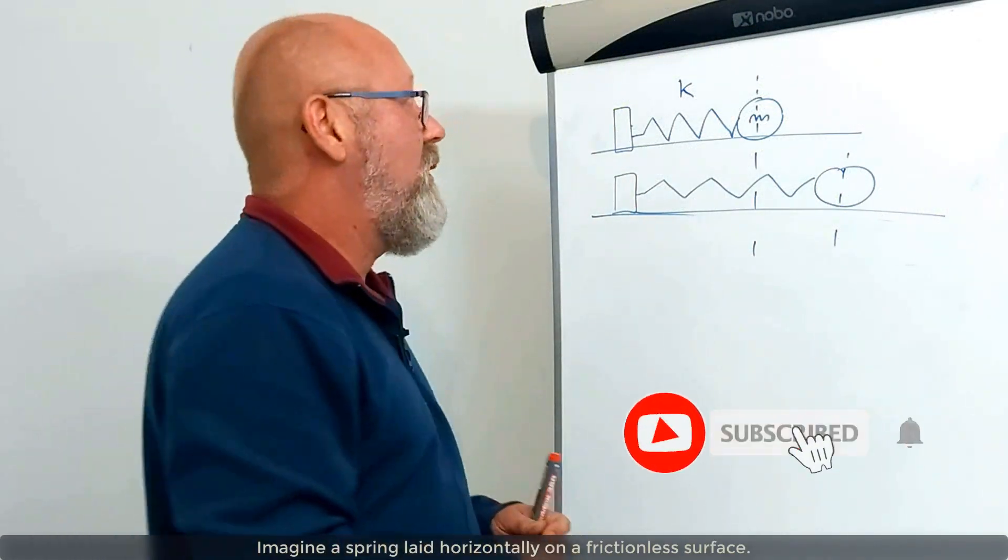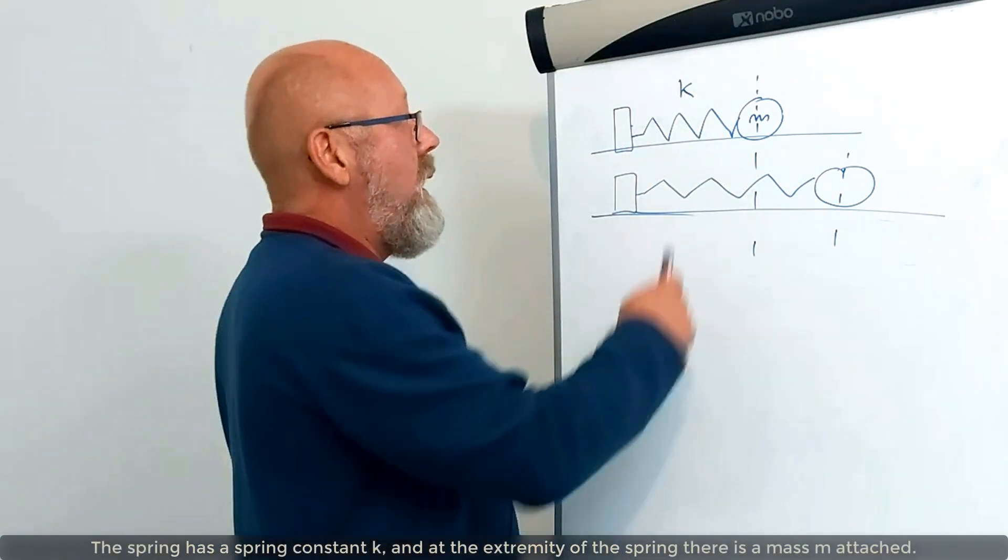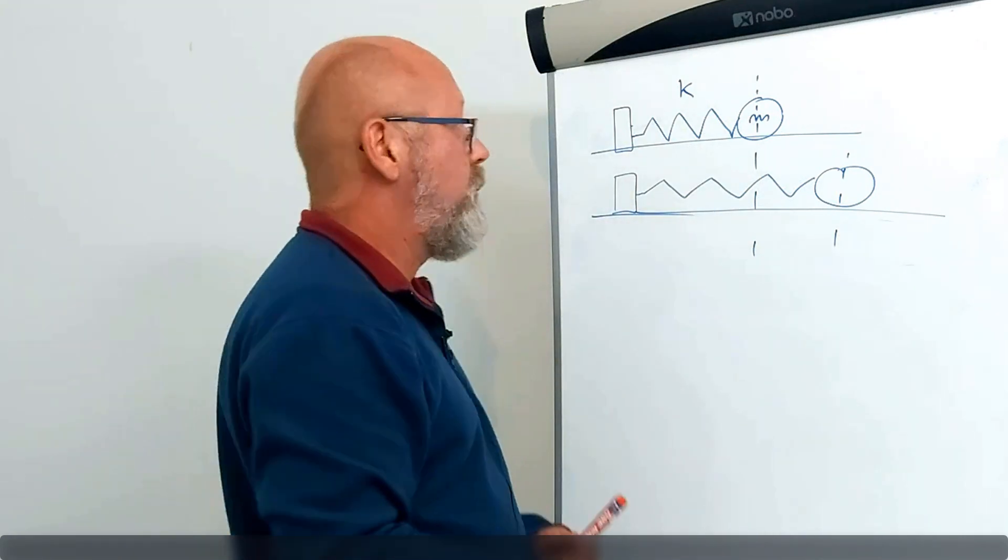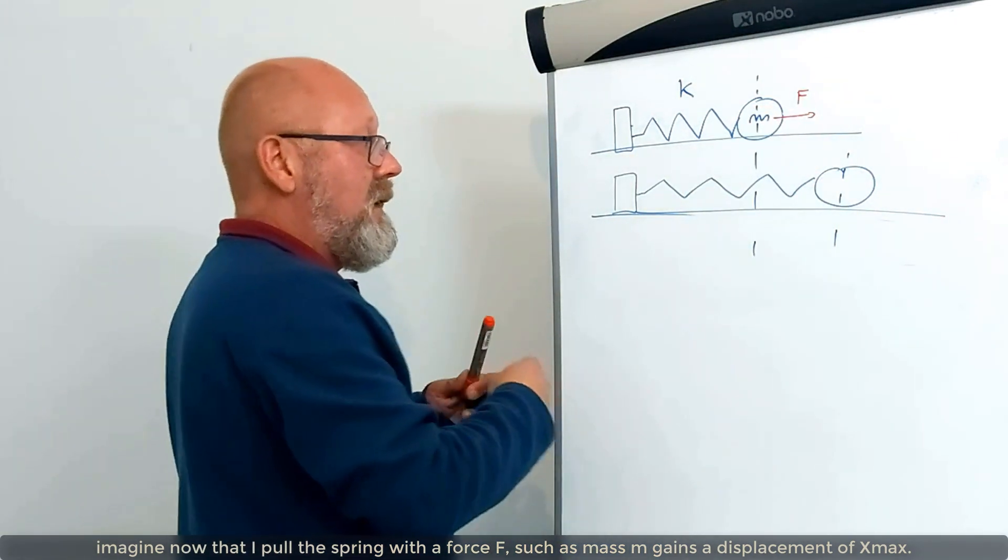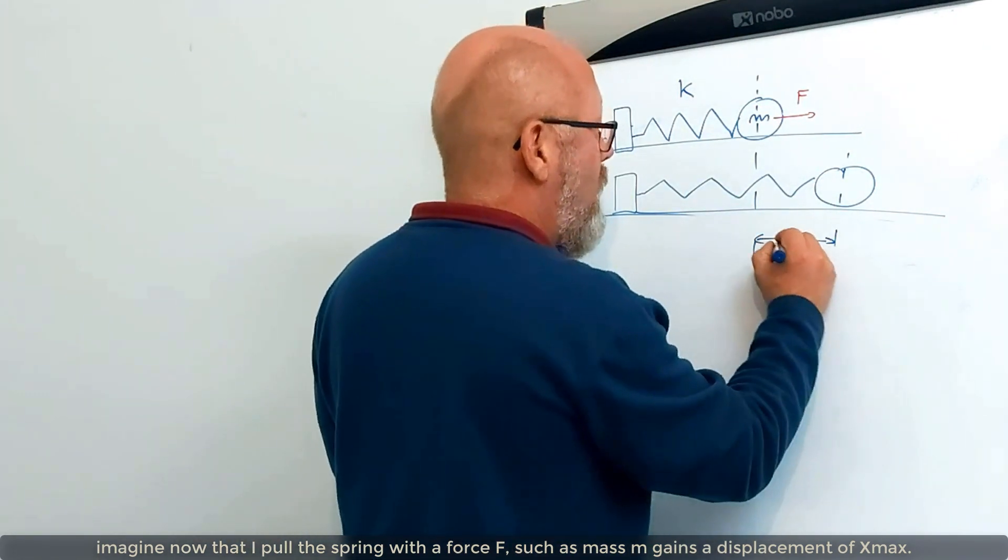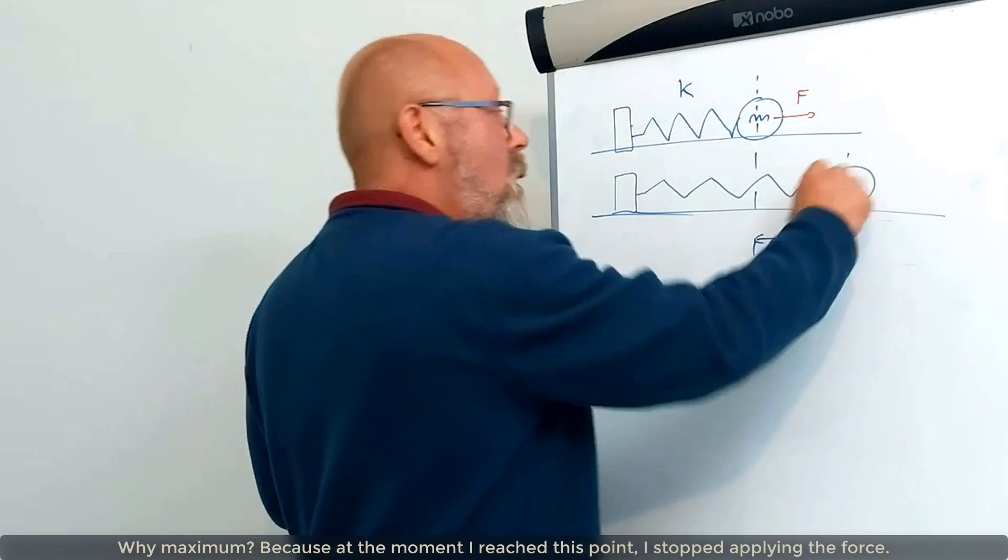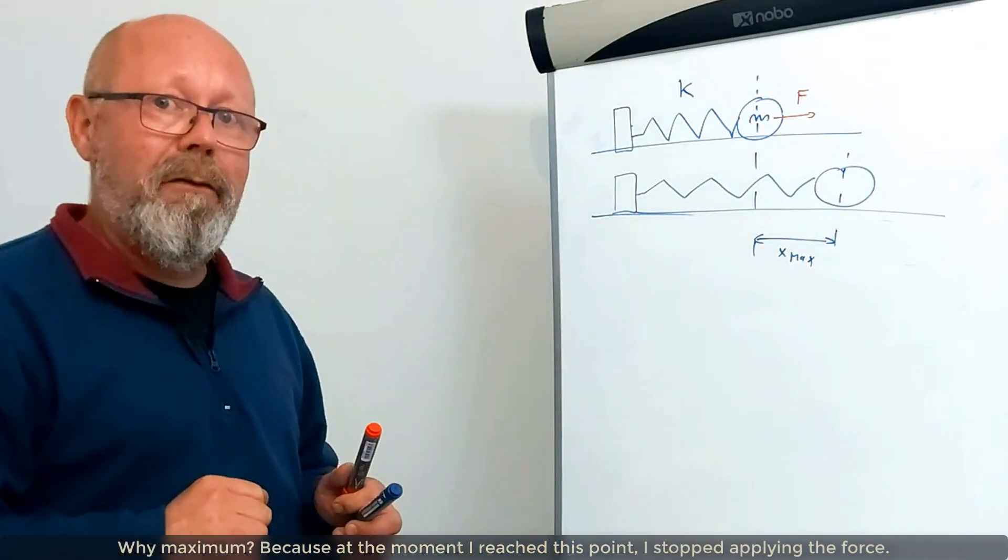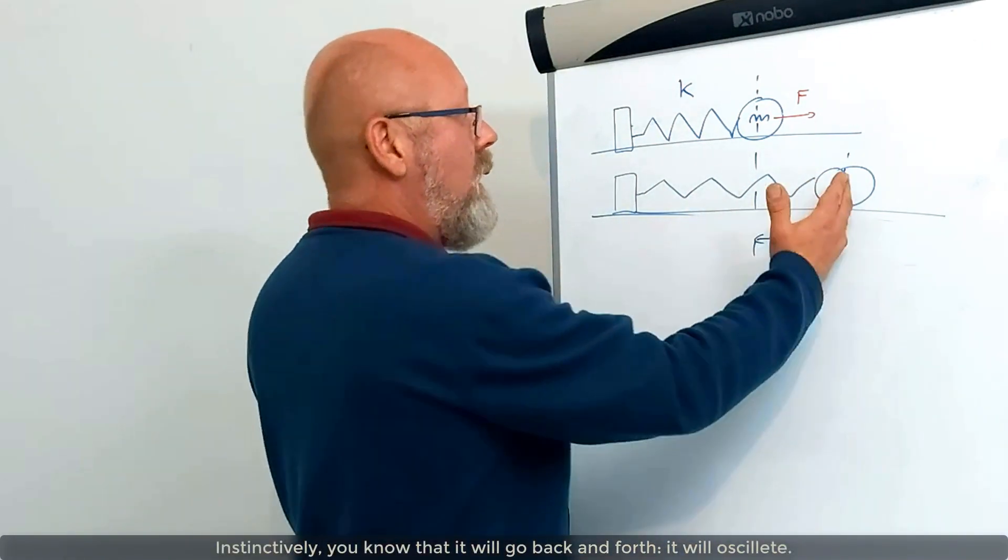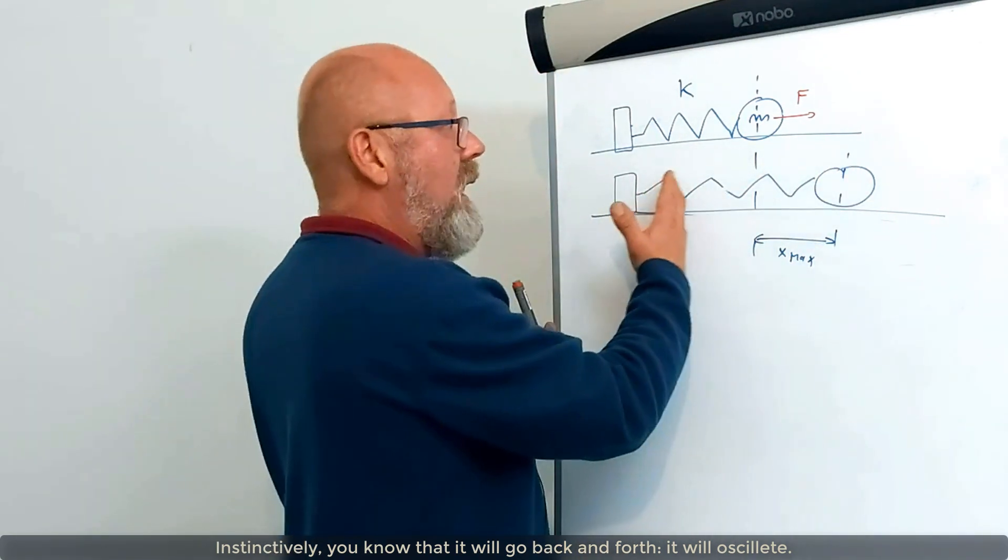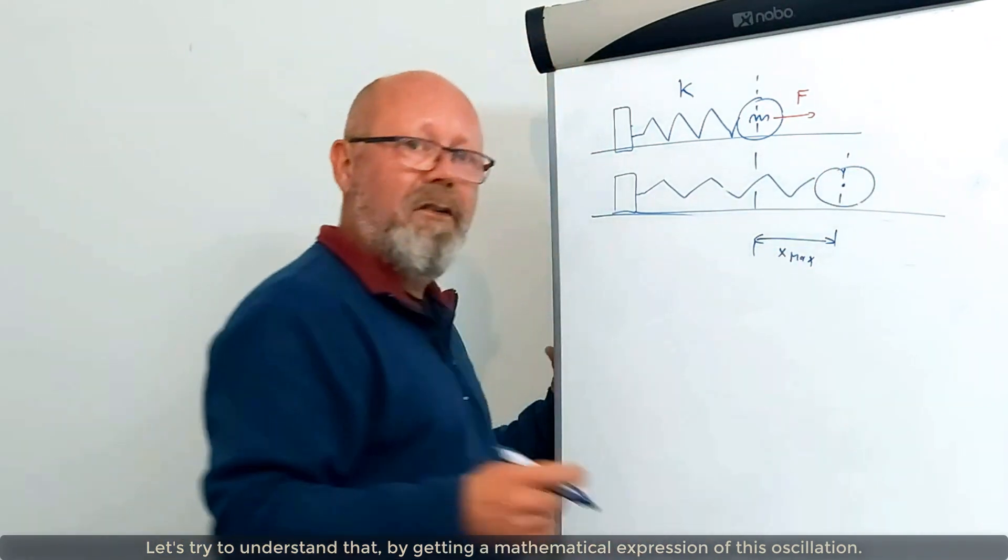Imagine a spring, which is laid horizontally on a frictionless surface. This spring has a spring constant, k. And at the extremity of the spring, there is a mass m. Imagine now that I pull the spring with a force F, such as I arrive to a displacement of the mass m x max, a maximum displacement. Why maximum? Because, at the moment when I reach this point, I stop applying the force F. So, what do you think will happen to the mass? Well, naturally, instinctively, you know that it will go back and forth. It will oscillate. Let's try to understand that and try to get a mathematical expression of this oscillation.